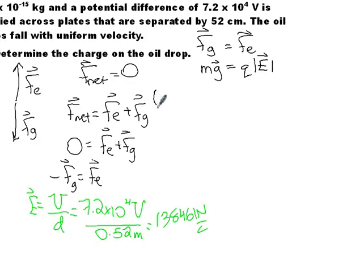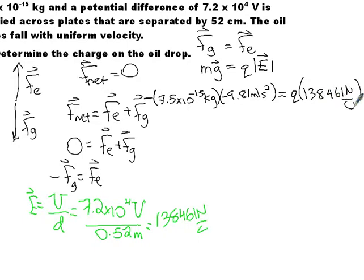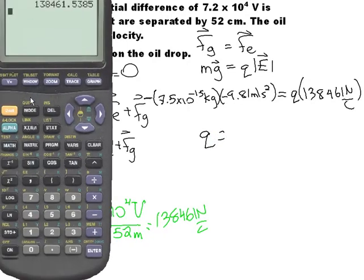The mass of the oil drop was given in the question, 7.5 times 10 to the negative 15 kilograms. The acceleration due to gravity is 9.81 meters per second squared. Technically that's a negative, because the force of gravity is going down. But remember also, technically there's a negative sign here outside of the brackets. So the two negatives become positive, and if you don't want to put the negative in, it's not a huge deal on this problem. The next one, it is going to be. So you know, just bear that in mind, 138,461. From here, it's just a bit of math to plug and chug through on your calculator. And so, let us do that.